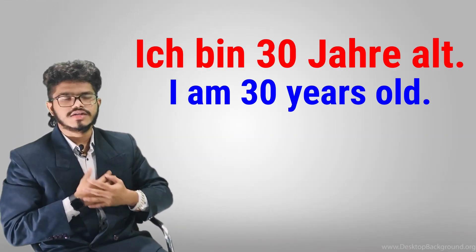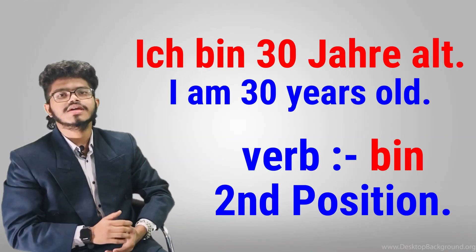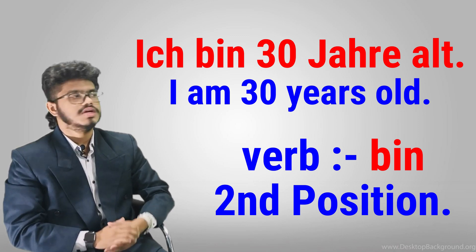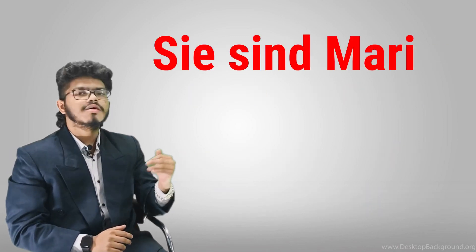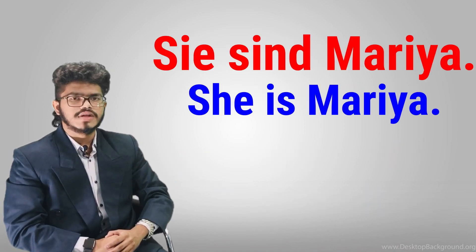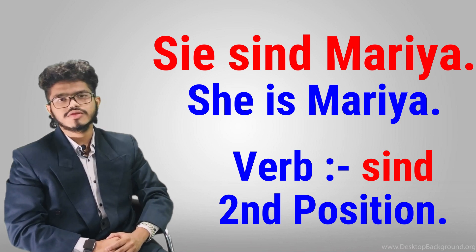Ich bin dreißig Jahre alt. The verb 'bin' is at the second position. Sie sind Maria. The verb 'sind' is at the second position.